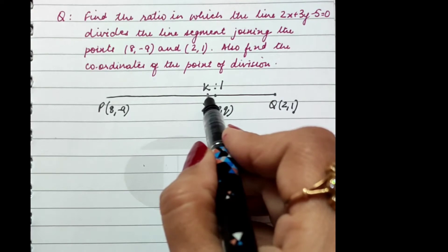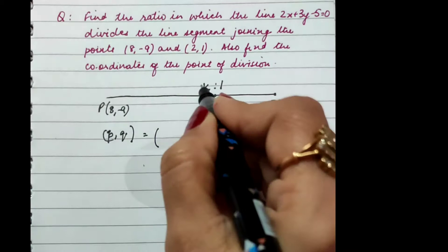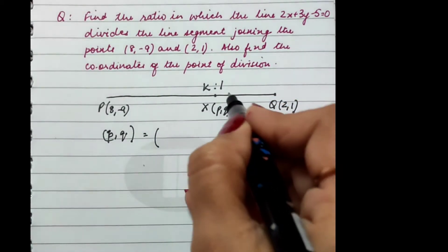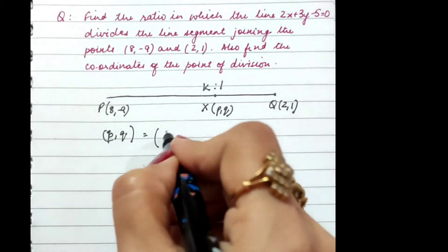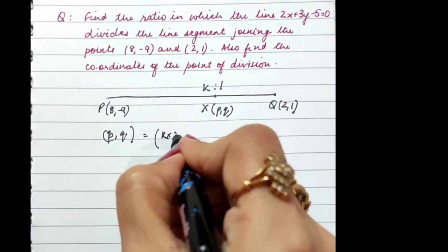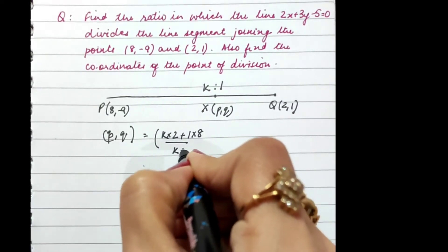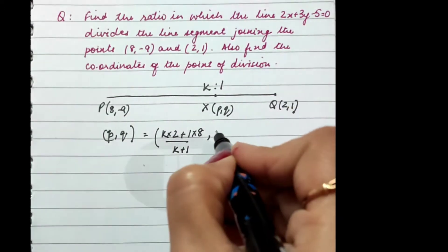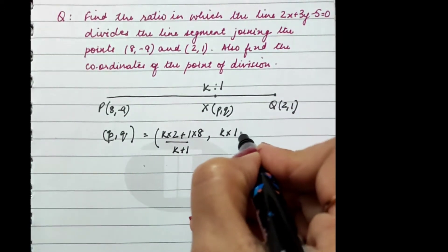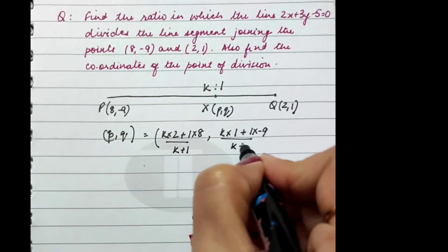then the x-coordinate will be given by (k×2 + 1×8)/(k+1) and the y-coordinate will be (k×1 + 1×(-9))/(k+1).